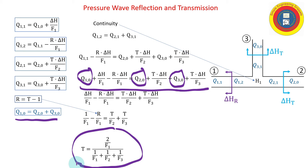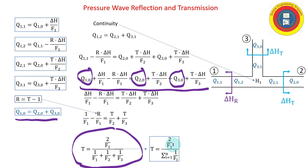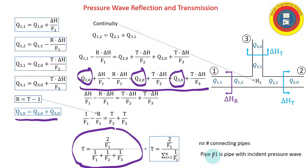Substituting R equals T minus one and solving, we get the transmission factor. For a general n-pipe junction, the transmission factor is: T equals two divided by F1, all over the sum from i equals one to n of one over Fi, where n is the number of connecting pipes and F1 is the elastic factor for the pipe carrying the incident pressure wave.